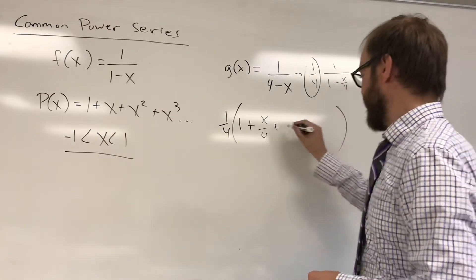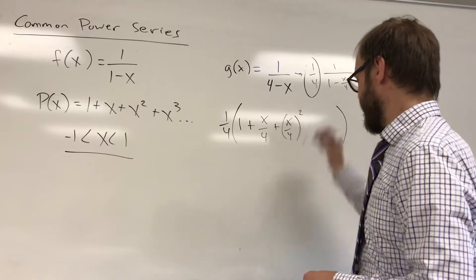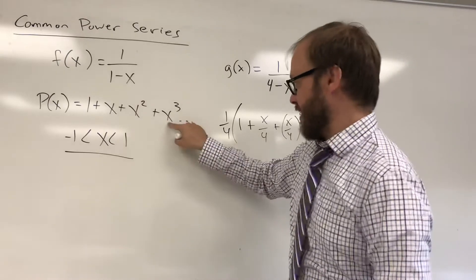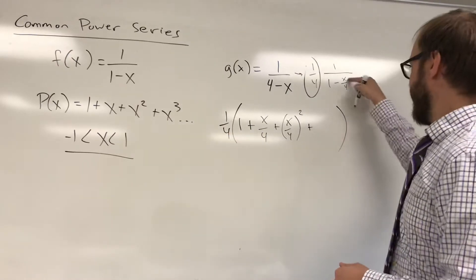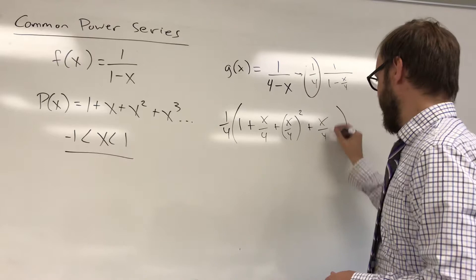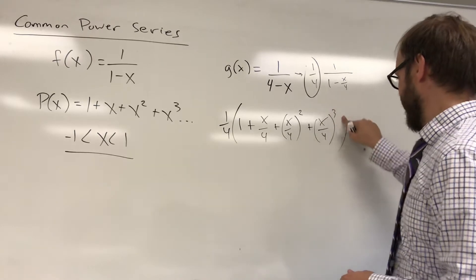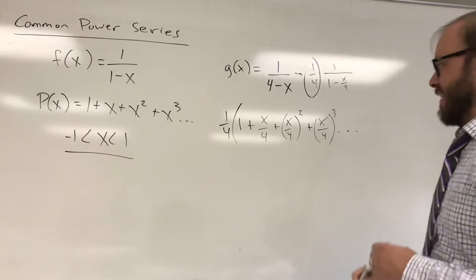So our input here is x over 4, and that's being squared. Plus your input cubed. That's going to be x over 4 cubed. And, of course, this is going to continue on out to infinity.